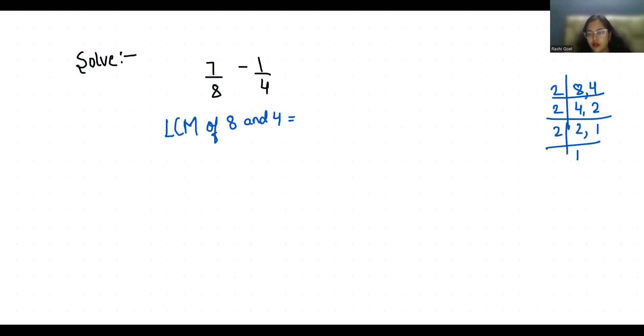And here 1, 1. Now we will multiply these numbers together. So 2 times 2 is 4, and 4 times 2 is 8. So LCM of 8 and 4 is 8.